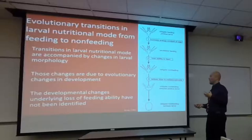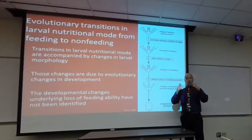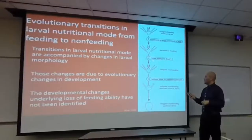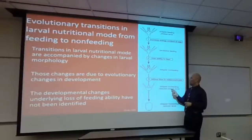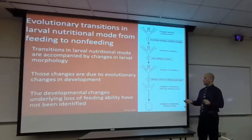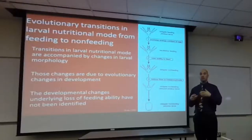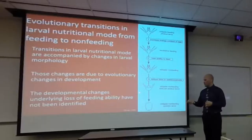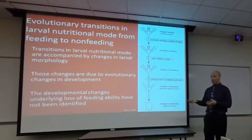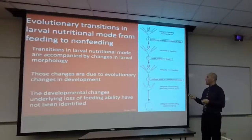Our current understanding is that we begin with species with feeding larvae. There are evolutionary increases in energy content as yolk is added, so the egg gets bigger. Descendants of those feeding-larval species eventually lose the ability to feed. We're not really sure what developmental changes are associated with that loss in larval feeding — what is happening that causes them to lose the ability to feed. The developmental changes underlying the loss of feeding have not been identified.